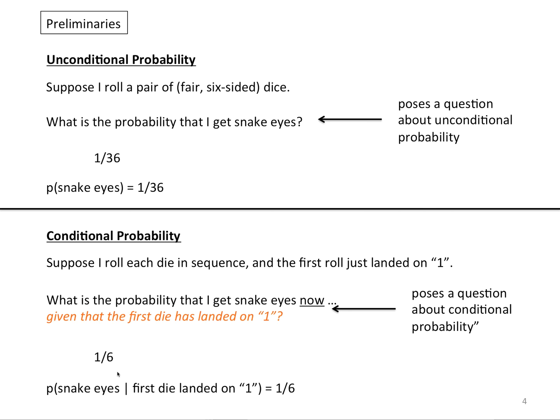And the answer, of course, is 1 sixth. I write it this way: the probability of snake eyes - and here's the important part - this bar means given that the first die landed on 1. Well, that probability is 1 sixth.